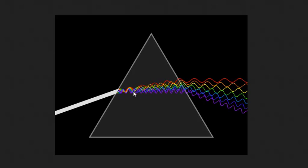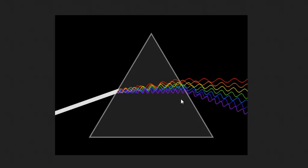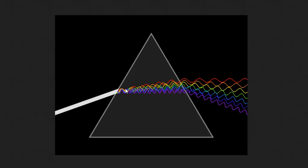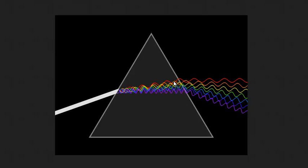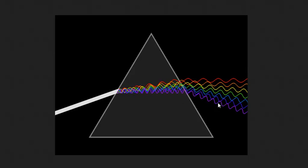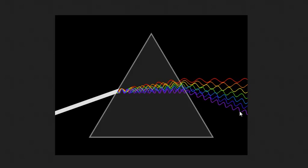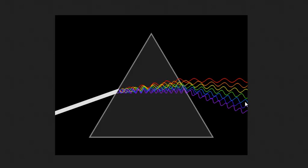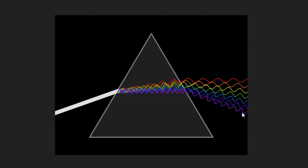The violet refracts the most because it's slowed down the most, and the red refracts the least. They come out again and that causes them to bend and refract even more as the violet speeds up the most. And then we have this spectrum of colour on the other side.